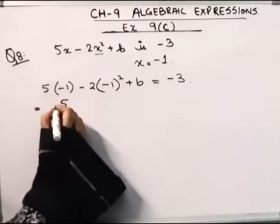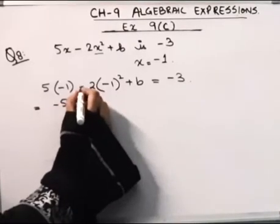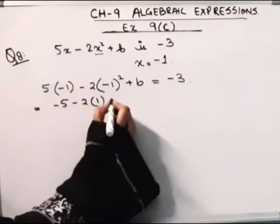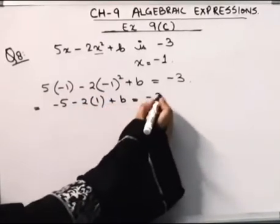5 ones are 5 with a negative sign. This is -2 into -1 into 1 is 1 plus b. This is equal to -3.